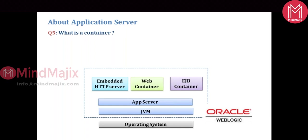How these containers are used depends upon what you are going to deploy. If you deploy a WAR file, it uses only the embedded HTTP server and web container — it doesn't require an EJB container. Apache Tomcat contains only those two containers; it doesn't have an EJB container. That is why, by default, you cannot deploy an EAR file onto Tomcat — on Tomcat, you can deploy only a WAR file. When you deploy an EAR, it uses all three containers.